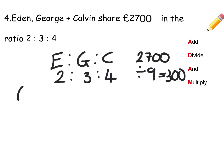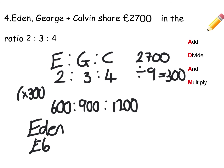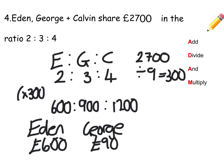Then we multiply: 2 times 300 — Eden will get £600. 3 times 300 will be £900. And 4 times 300 will be £1,200. So to conclude: Eden gets £600, George gets £900, and Calvin gets the most — Calvin gets £1,200.